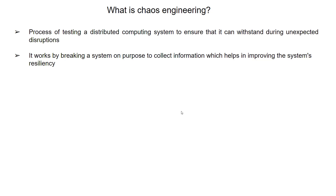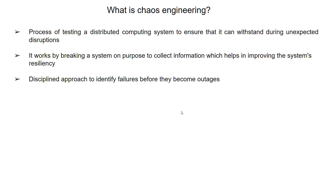Chaos engineering works by injecting failure or breaking the system on purpose so that we get more information, and that information helps us in improving the system's resiliency. It is a disciplined approach to identify failures before they become outages.